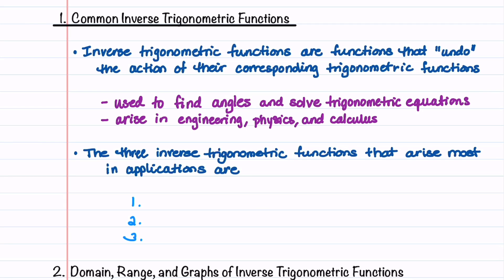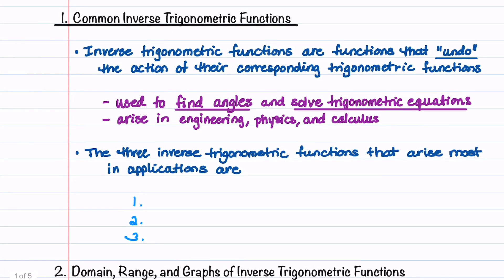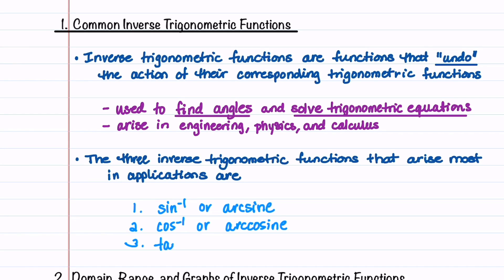We'll begin by going over three common inverse trigonometric functions. Inverse trigonometric functions are functions that undo the action of their corresponding trigonometric functions. They are used to find angles and to solve trigonometric equations. The three inverse trigonometric functions that arise most in applications are the inverse sine or arc sine function, the inverse cosine or arc cosine function, and the inverse tangent or arc tangent function.